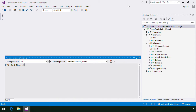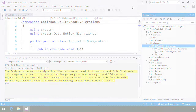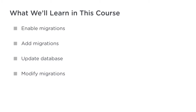Code First Migrations allows you to update an existing database when your model changes without losing any data. In this course, you'll learn how to enable migrations for a project, add migrations, and update your database. You'll also see an example of how to modify a migration, and we'll review deployment options. By the end of this course, you'll be able to leverage Code First Migrations to keep your database in sync with your data model.